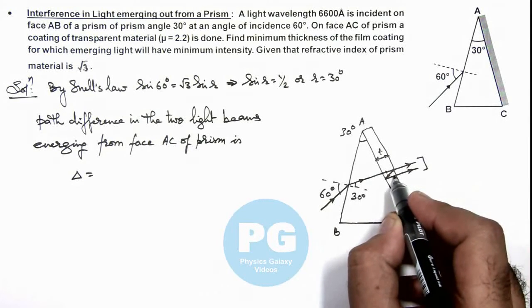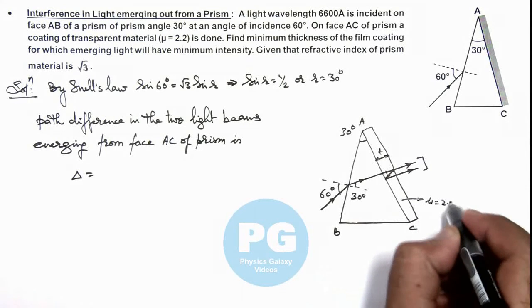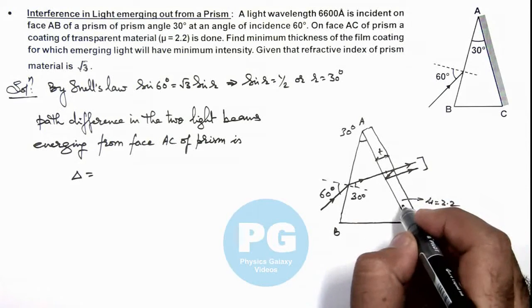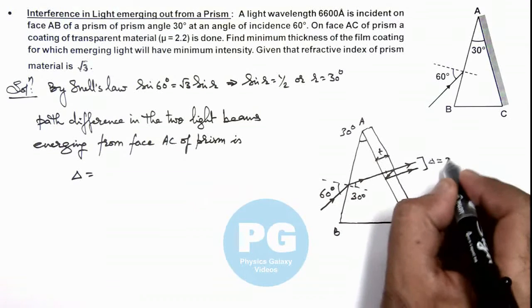In a refractive index mu which is given as 2.2, so in this situation here we can write the path difference in these two light rays will be 2 mu t.